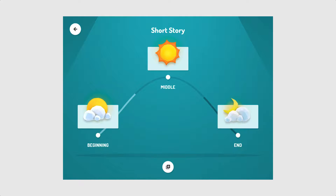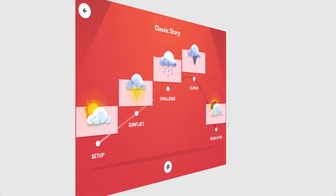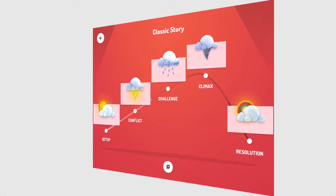The short story comes with a beginning, middle, and end. The classic story comes with five parts including a setup, conflict, challenge, climax, and resolution.